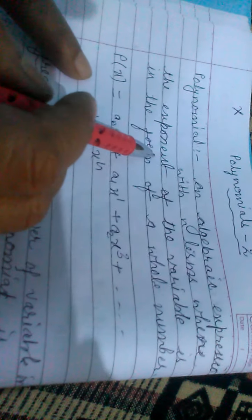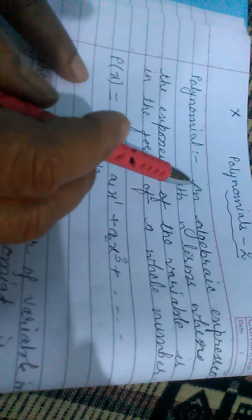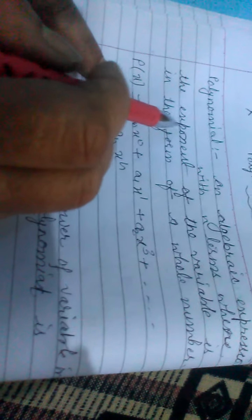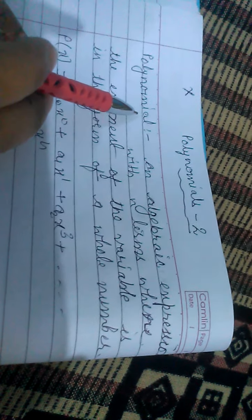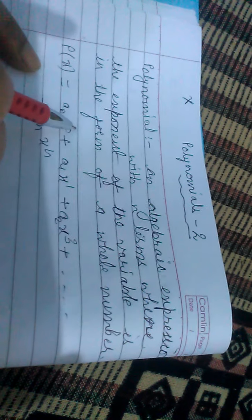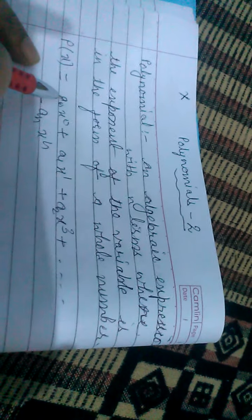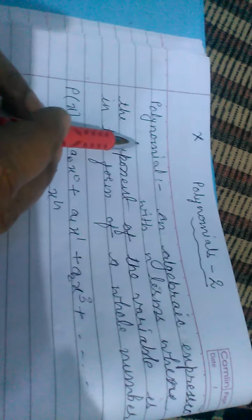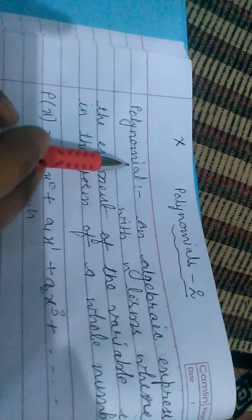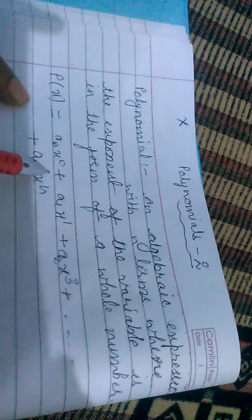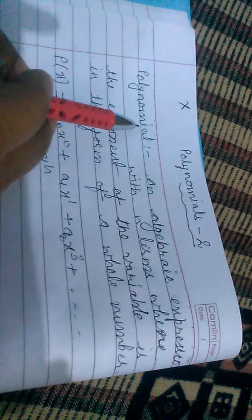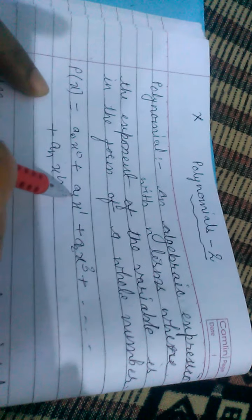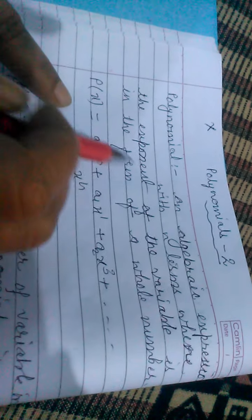An expression in which only one term is present, then it is called a monomial. A polynomial which contains two terms is called a binomial. An expression which contains three terms is called a trinomial. An expression in which there are n terms is called a polynomial.